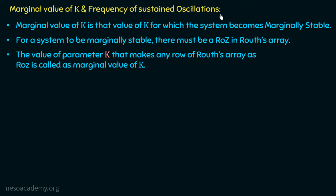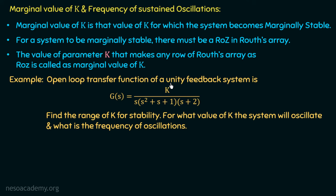Let us understand this with an example. The open loop transfer function of a unity feedback system is G(s) = k / [s(s² + s + 1)(s + 2)]. Find the range of k for stability, for what value of k the system will oscillate (the marginal value of k), and what is the frequency of oscillations. We will use the RH criteria to determine all three.